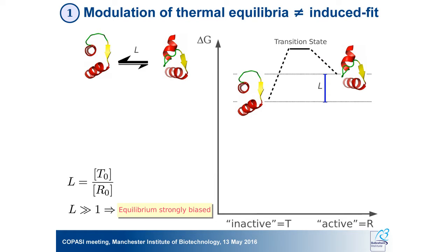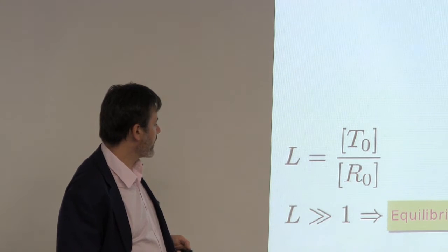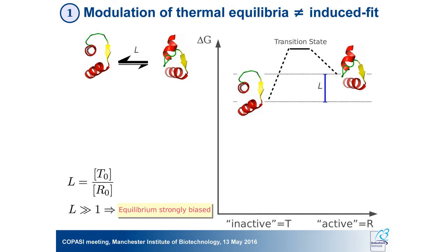So we need to use the allosteric framework developed in the 1960s. The idea is that a protein is in thermal equilibrium between different conformational states, completely independent of any ligand. This equilibrium is characterized by the difference in free energy between states — we call this L, the allosteric constant — the ratio of different states in the absence of ligand. If L is very large, the equilibrium is strongly biased toward the inactive or closed state, which we call the T state. The other state is called the R state — for tense and relaxed — that's just historical.